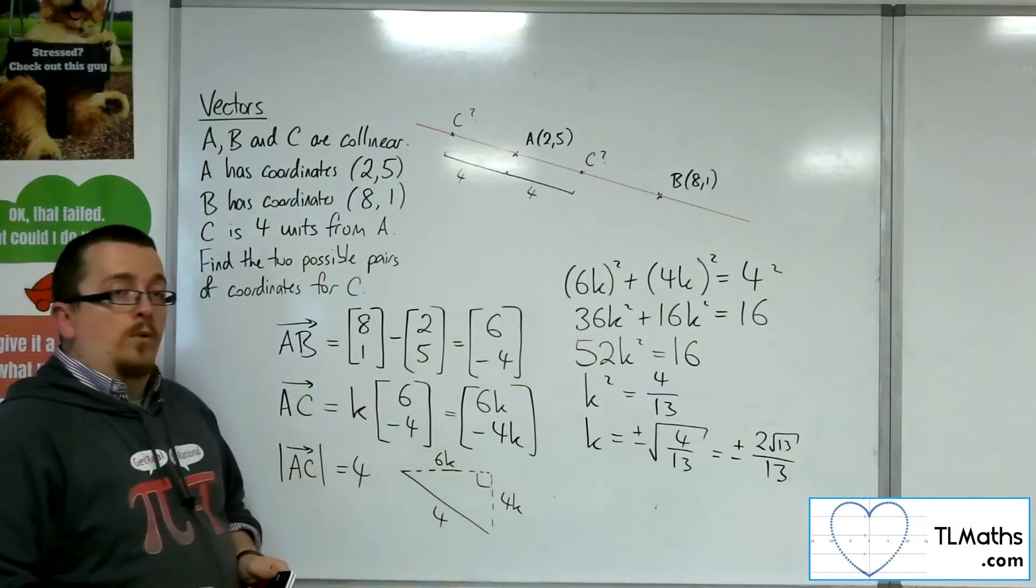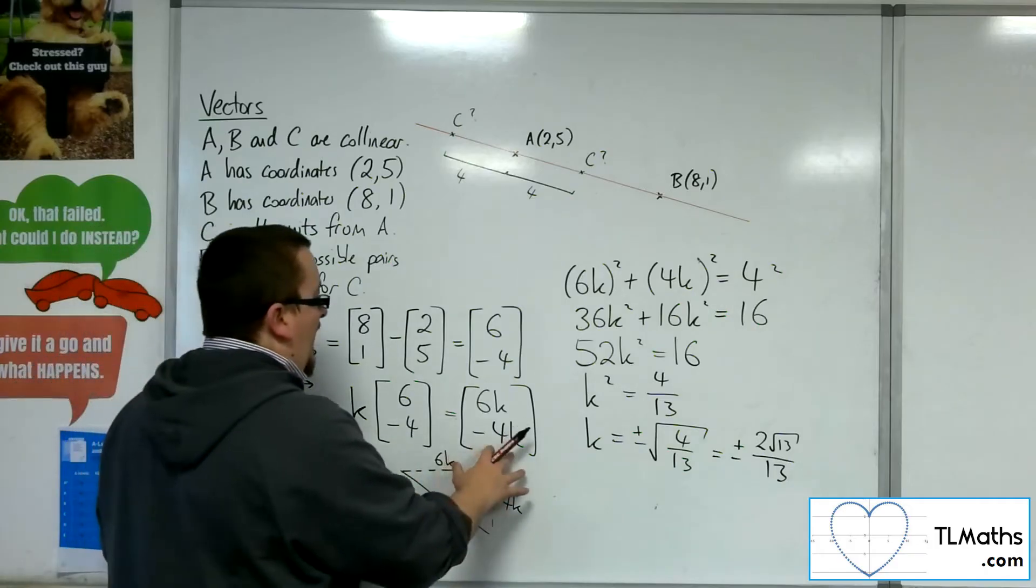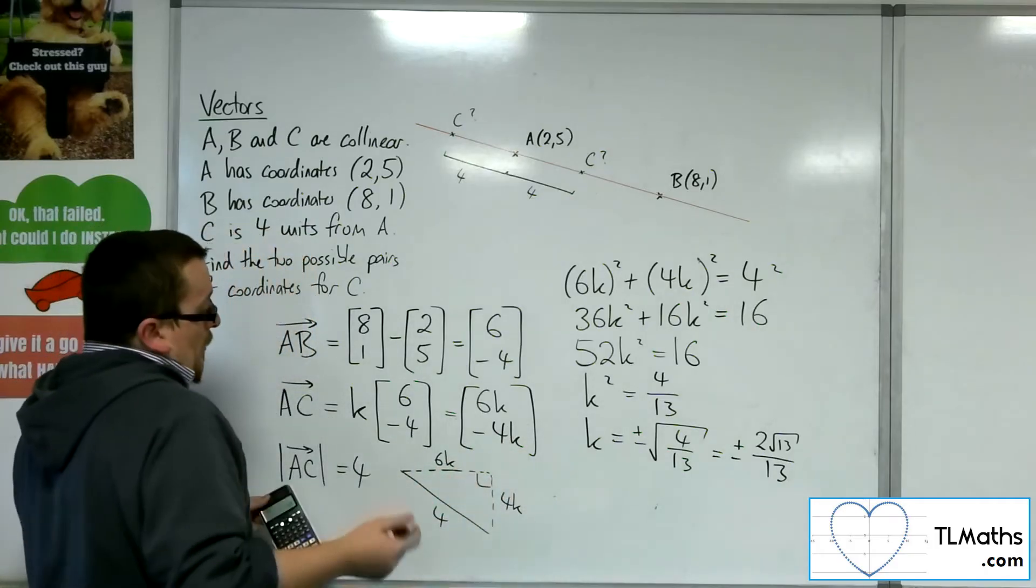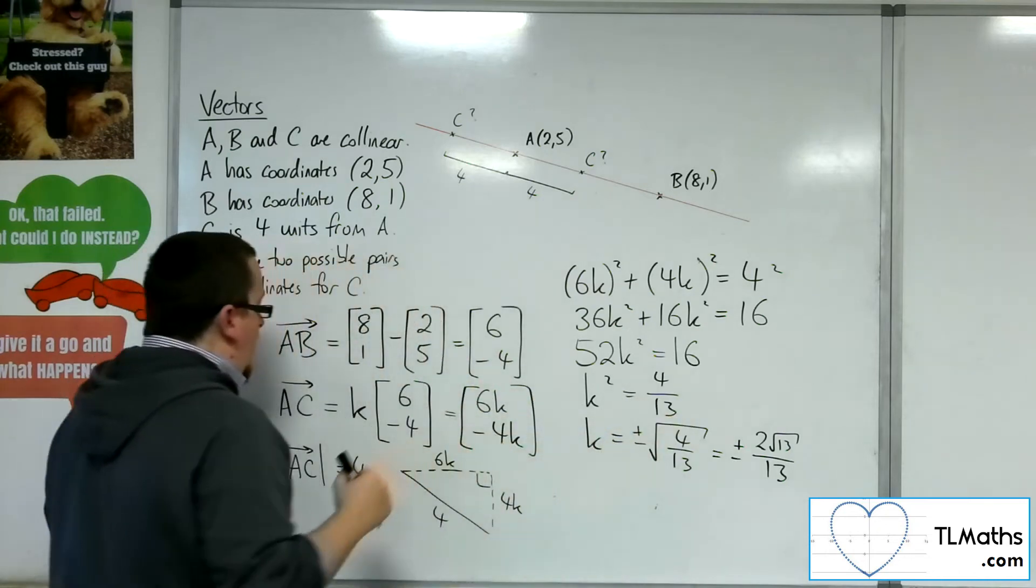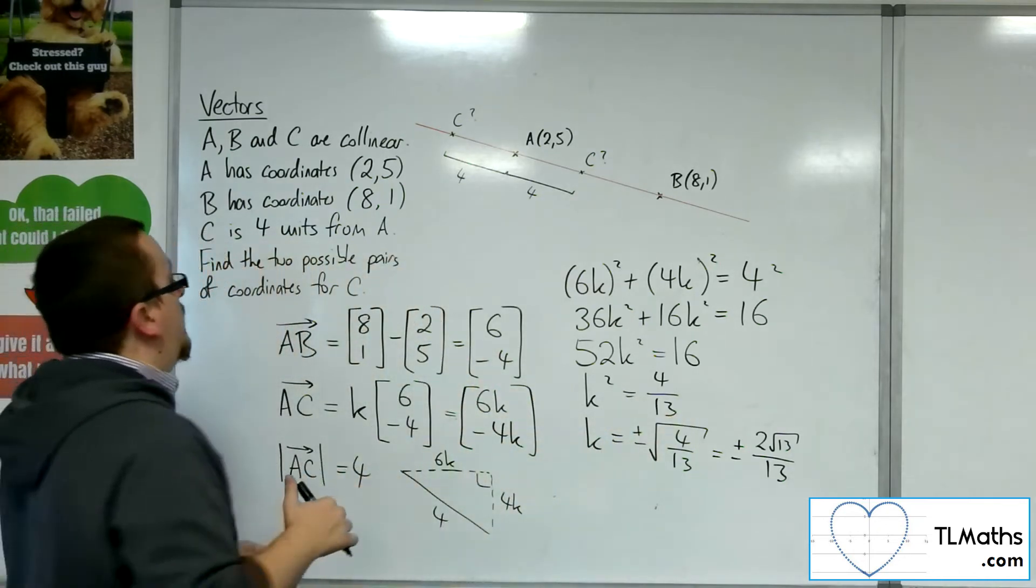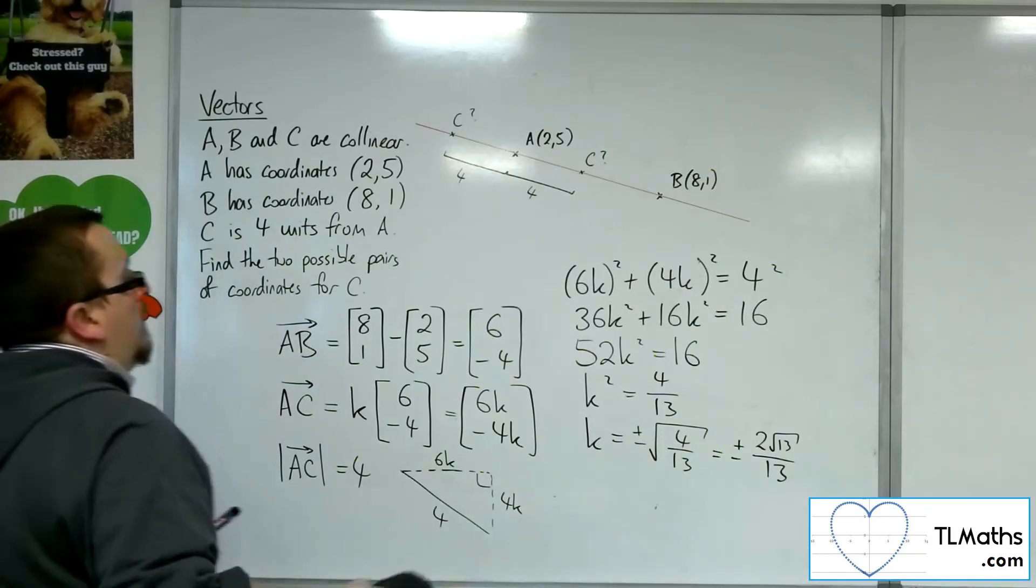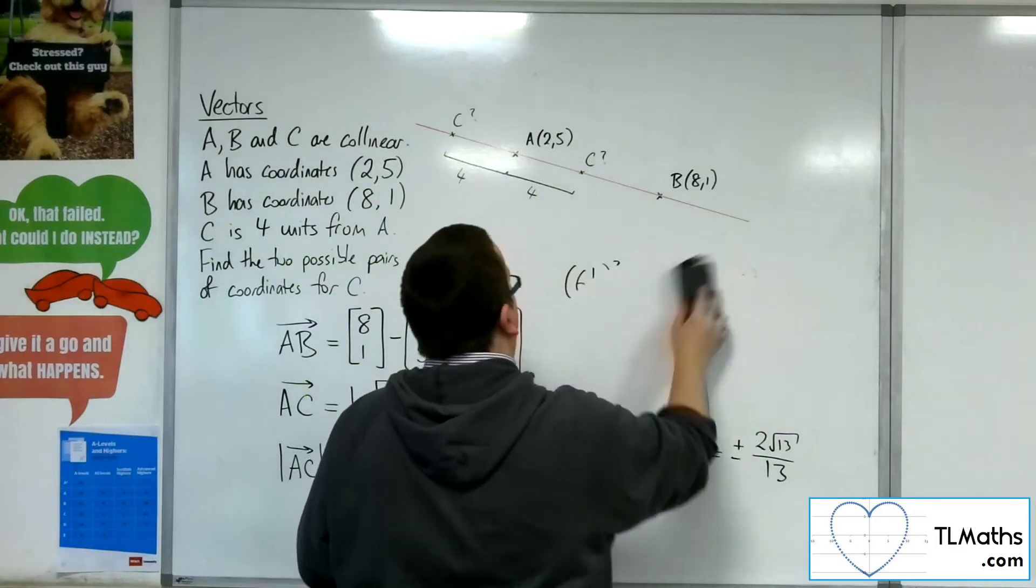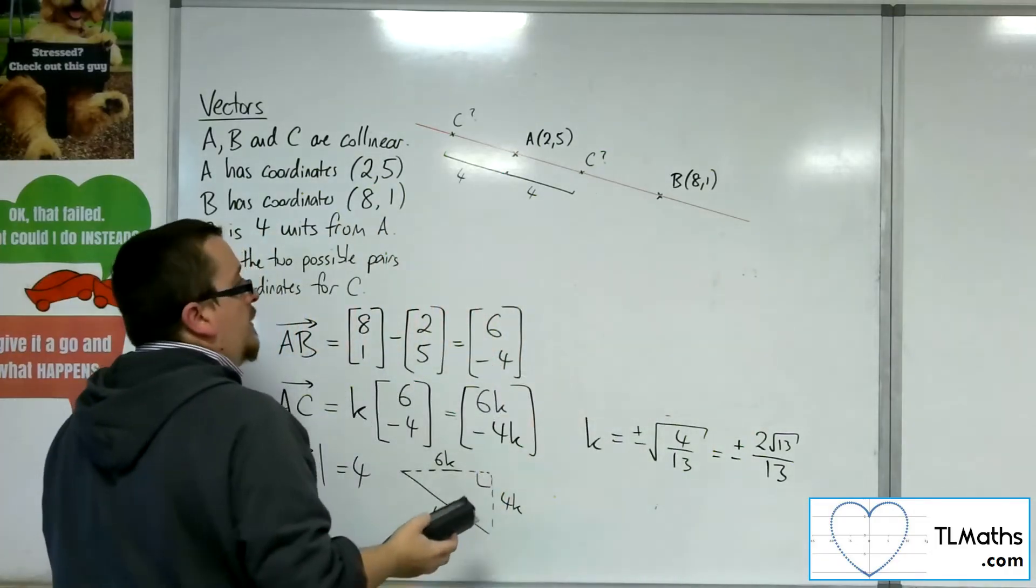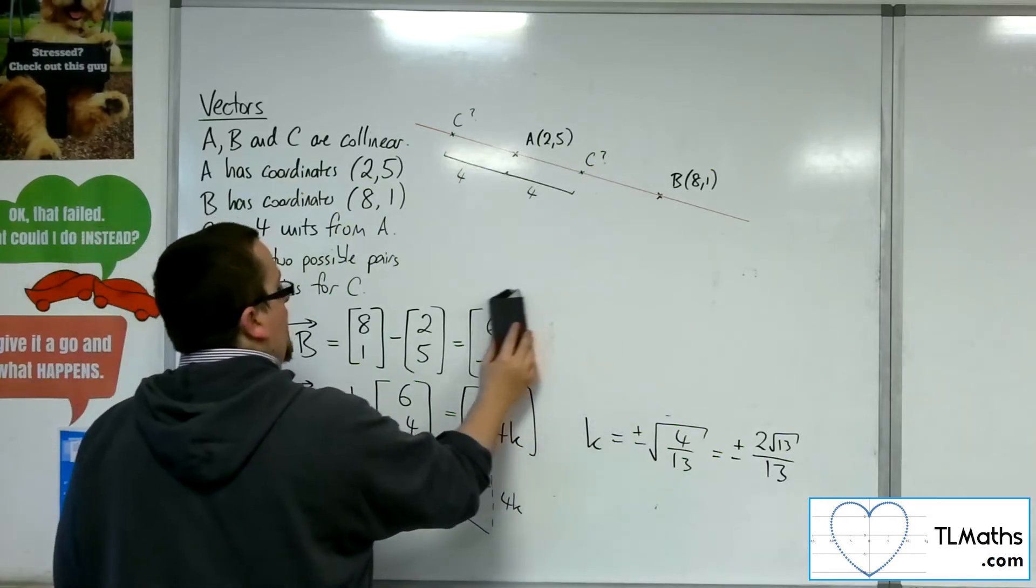So I now know the vector for A, C. Well, I know the K value and I can then substitute that in to the vector A, C. So let's do that. So let's give myself a little bit of space. I'm going to erase that working there. Just trying to think of what I'm probably going to need. I don't think I'm going to need A, B anymore.